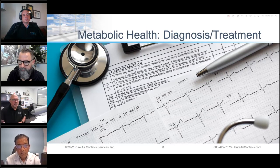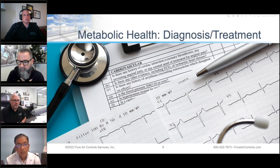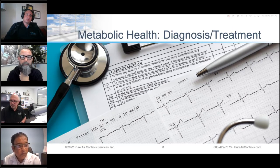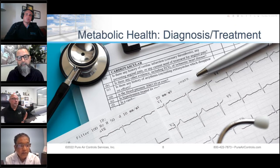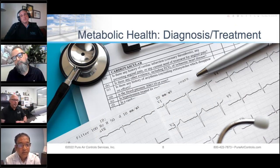Ten thousand is exaggerated, of course. We see one thousand to fifteen hundred as the borderline of what would be considered acceptable in a building. Less than one thousand PPM should be the target — not exceeding one thousand PPM is what would be the goal.